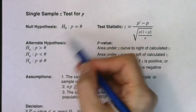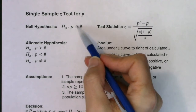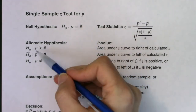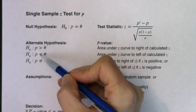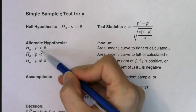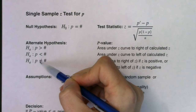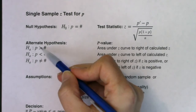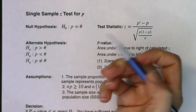The thing that changes between the null and the alternate is the symbol. The equals sign always goes on the null, and on the alternate you'll either have a greater than, a less than, or a not-equals-to. Greater than and less than are one-tailed tests; not-equals-to is a two-tailed test — right tail, left tail, two tail.